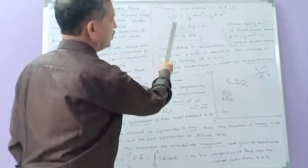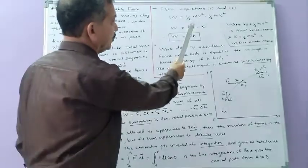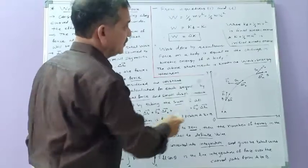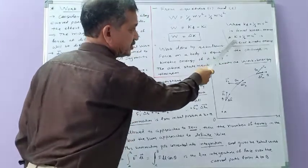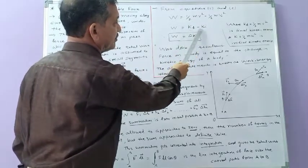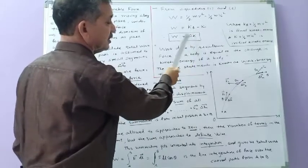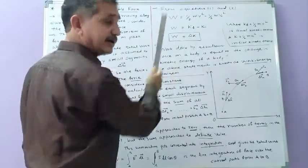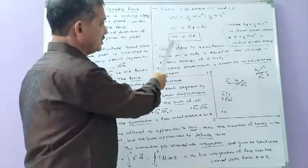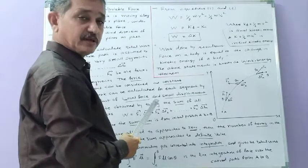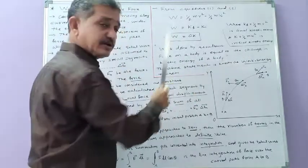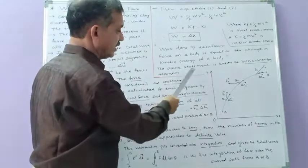So W = (1/2)mv² − (1/2)mv₀², where (1/2)mv² is the final kinetic energy Kf and (1/2)mv₀² is the initial kinetic energy Ki. Thus W = ΔK = Kf − Ki. This means the work done by the resultant force on a body is equal to the change in kinetic energy of the body. This statement is known as the work-energy theorem.